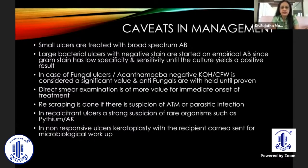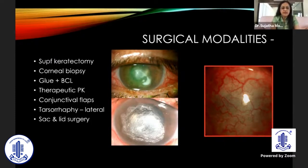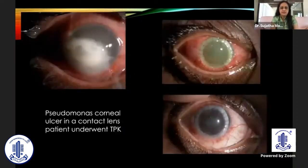Rescraping is done 24 hours after stopping antibiotics or antifungals to confirm the diagnosis. If the patient is not responding and has a recalcitrant ulcer, have a strong suspicion of rare organisms such as Pythium and acanthamoeba. In non-responsive ulcers extending to the periphery, therapeutic keratoplasty is better. Surgical modalities include superficial keratectomy, corneal biopsy, glue and bandage contact lens for impending or perforated ulcers, therapeutic penetrating keratoplasty, conjunctival flaps (Gundersen's flap) for non-responding ulcers, lateral tarsorrhaphy, and sac and lid surgery for dacryocystitis.